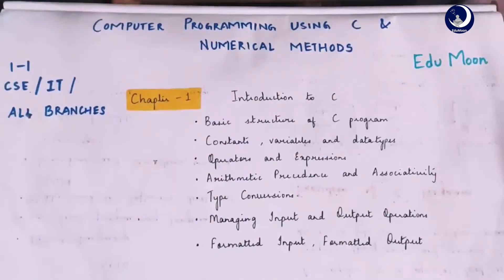In chapter 1, which is introduction to C, we will be seeing basic structure of C program, constants, variables and data types, operators and expressions, arithmetic precedence and associativity, type conversions, managing input and output operations, formatted input and formatted output.